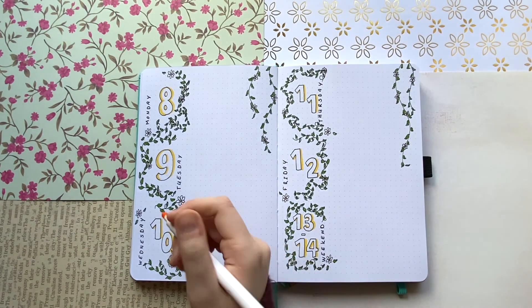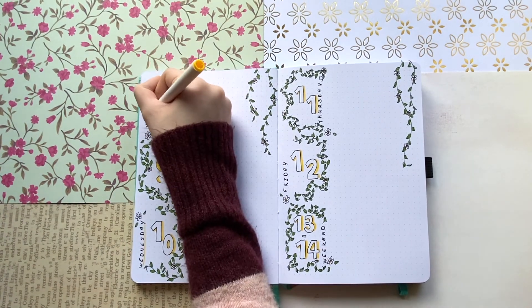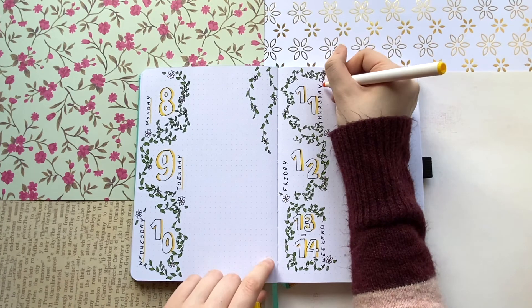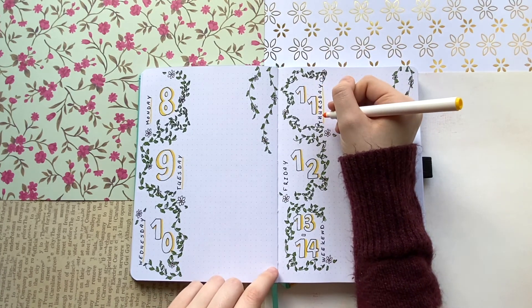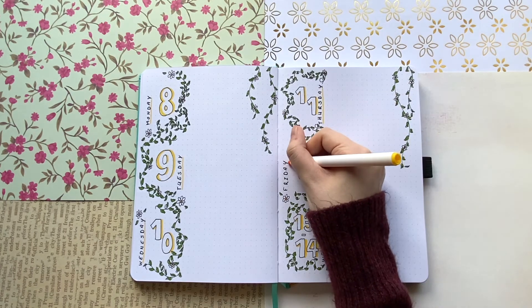And yeah, I also added a line of yellow underneath every single one of the days of the week just to make them pop out a little bit more, make them a little bit more evident instead of blending in with the crazy tangle of vines that we have. And I think it definitely helped.